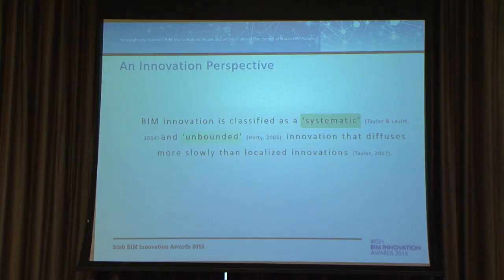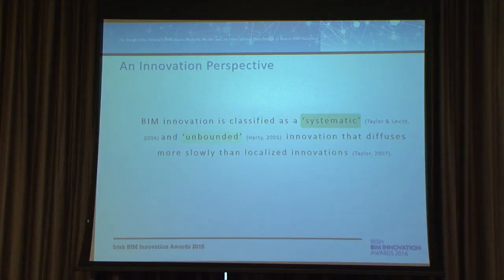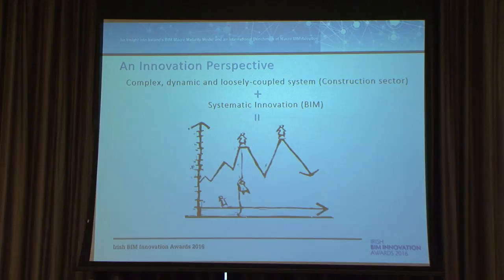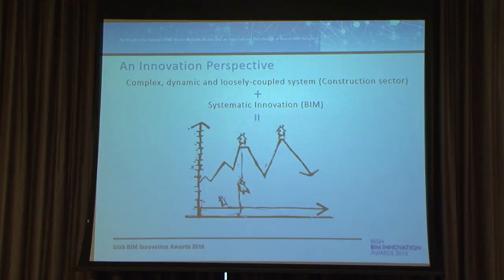In terms of innovation, what type of innovation is BIM? BIM is classified as a systemic or unbounded innovation. If you introduce a systemic innovation within a system — which is the construction industry — it entails changes and the introduction of multiple innovations simultaneously. It's not like replacing an LED bulb where the electric circuit stays the same. When you introduce BIM within the construction industry, you need to introduce multiple innovations at the same time, and it requires significant reshaping of the construction system. So combining a complex, dynamic, loosely coupled construction industry with BIM as a systemic innovation means: adoption is quite challenging.